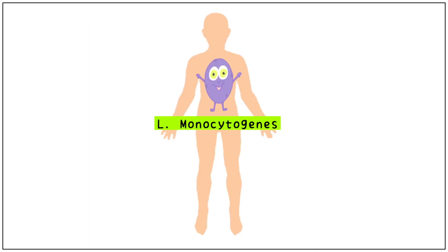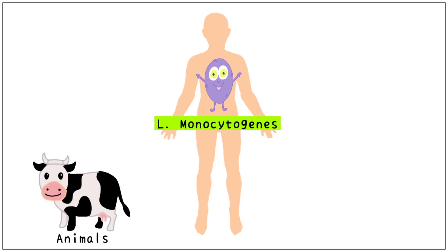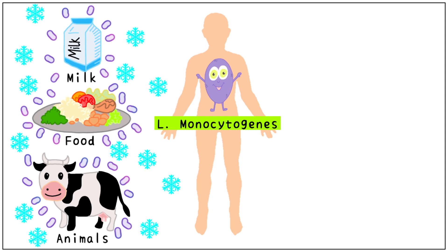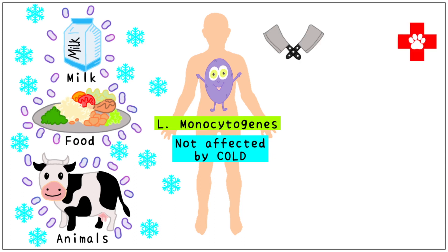The only species known to cause disease in humans is L. monocytogenes. This infection can be transmitted through animals, food, or milk that is contaminated with the bacteria. It is important to remember that Listeria is not affected by cold — it can easily survive in the refrigerator. This is why pregnant women are advised to always heat cold foods such as salads, meats, and sandwiches before consumption. People who work in close contact with animals, such as butchers, vets, and poultry farmers, are more susceptible to cutaneous infection.